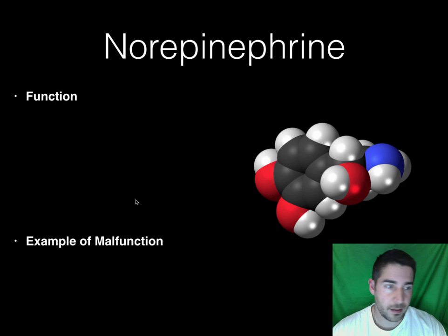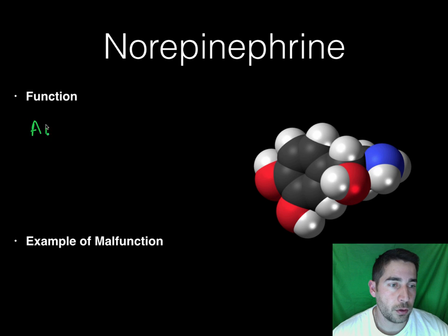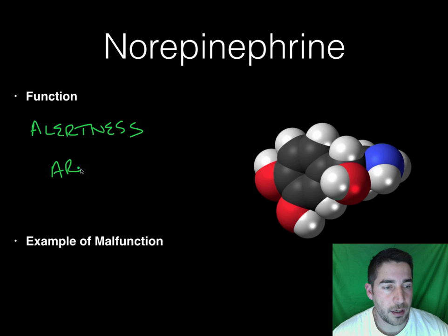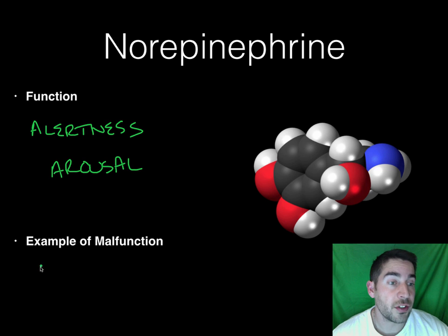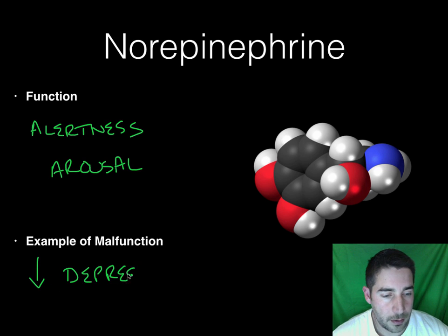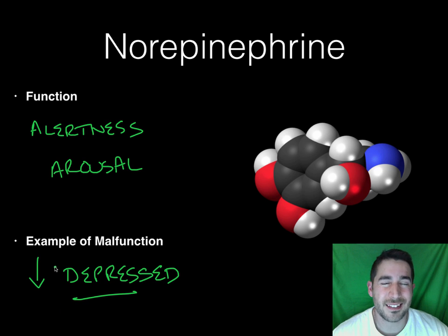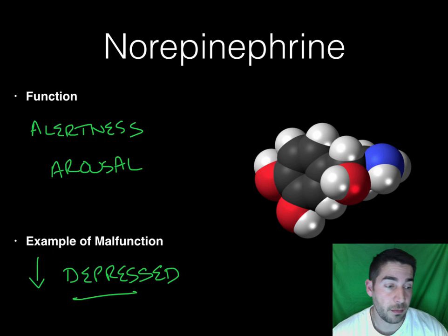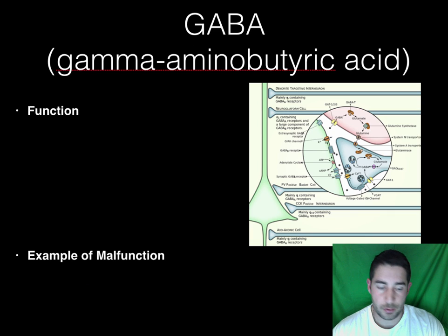Moving on to norepinephrine — norepinephrine helps control your alertness and also affects your arousal. If you have an undersupply, too little, you can be in a depressed mood. For this class, norepinephrine is not as commonly tested as serotonin and dopamine, which we really need to know about, but here's another one. Likewise, GABA — it's not a huge one either.